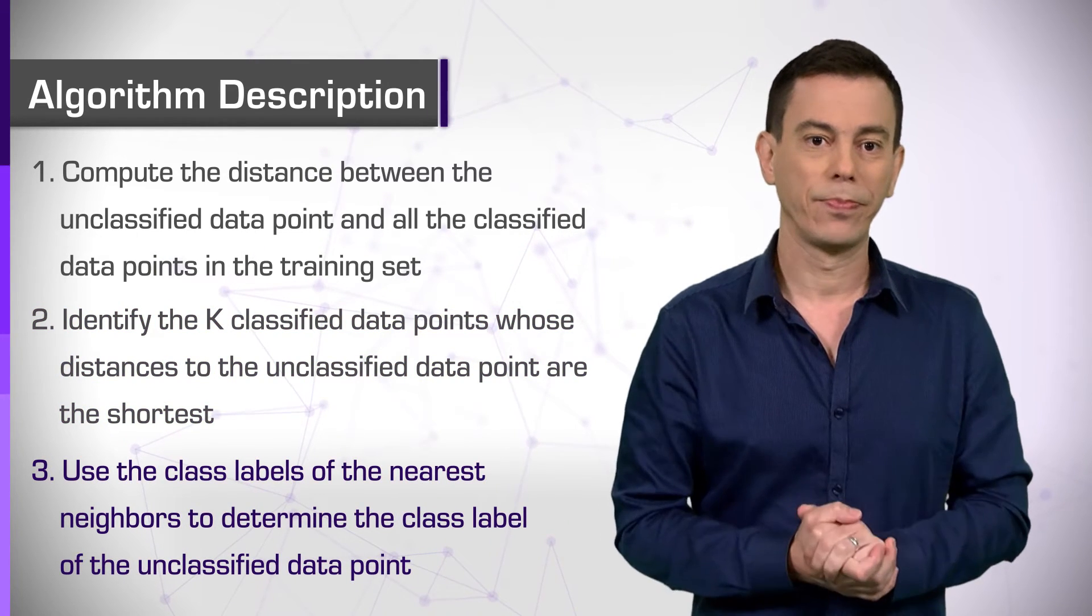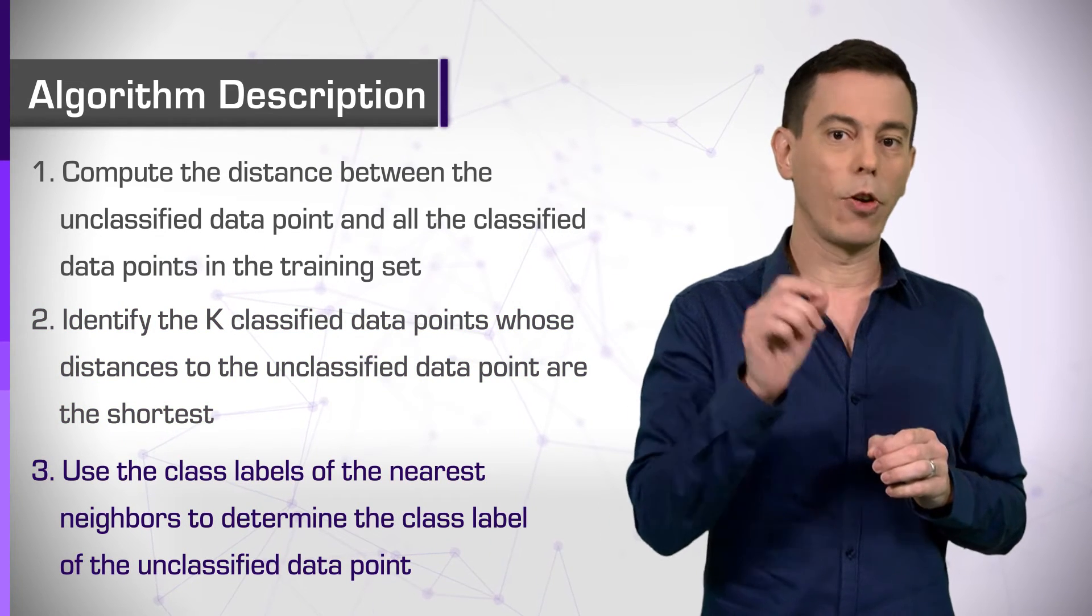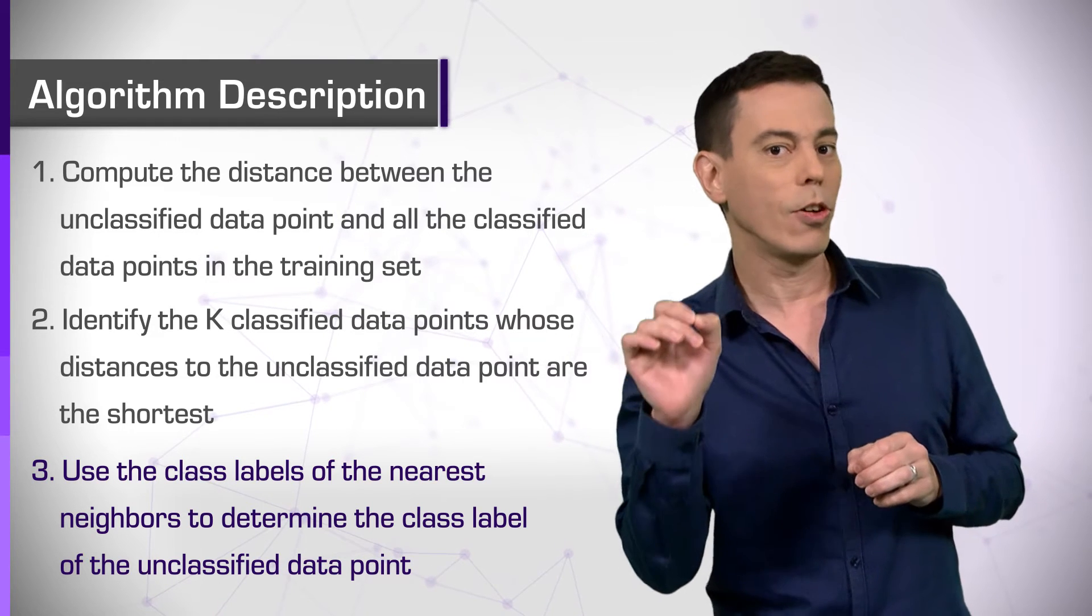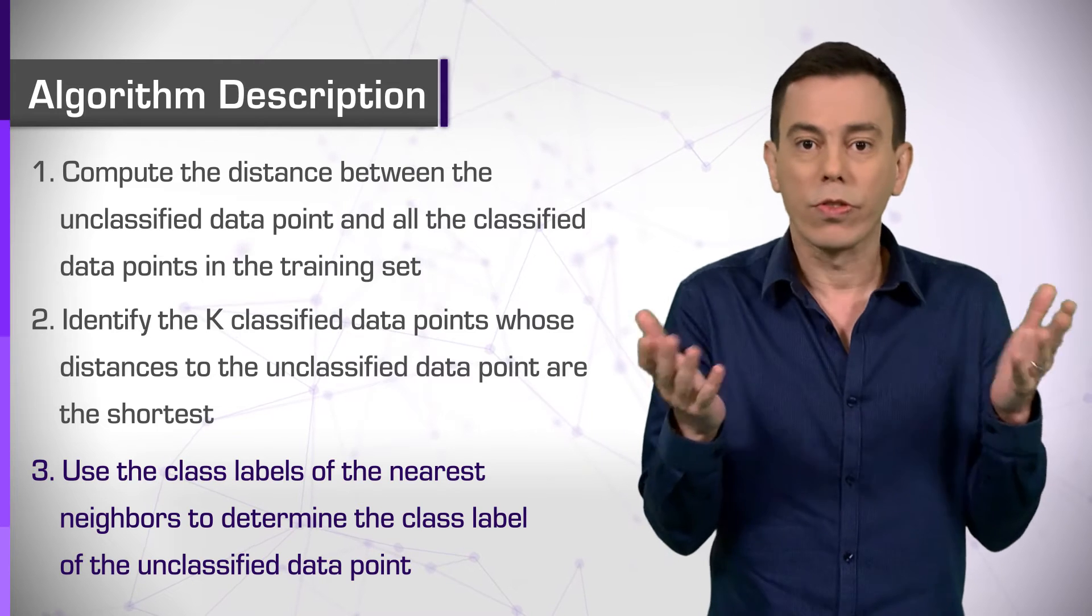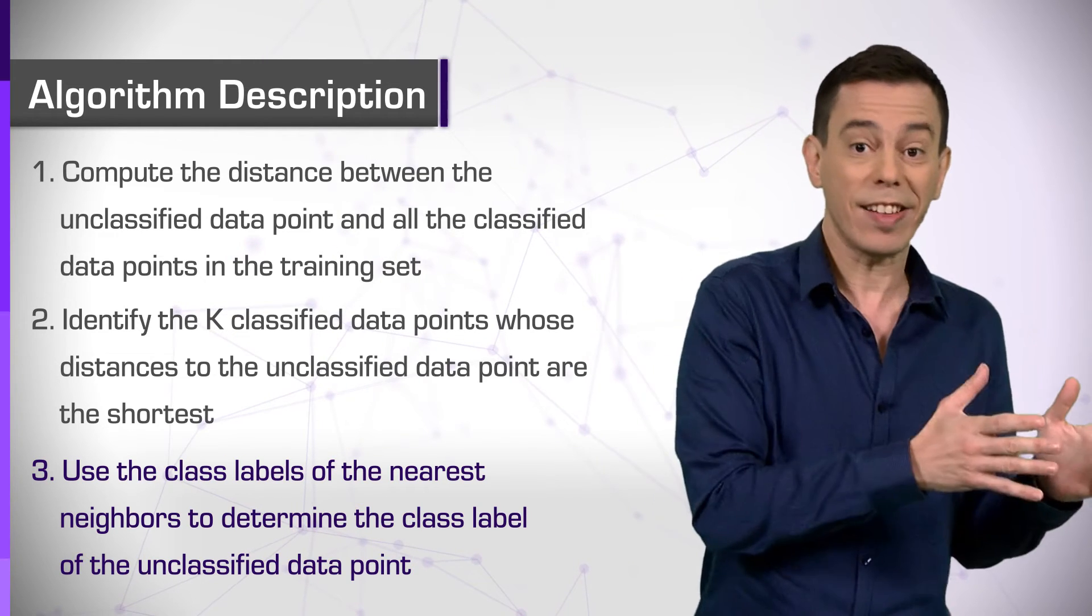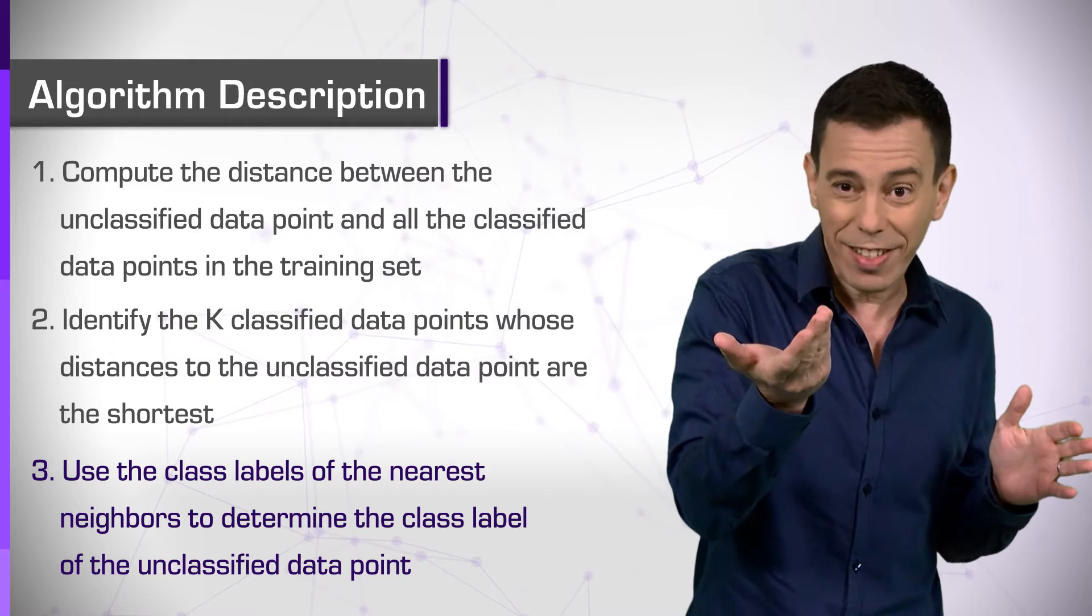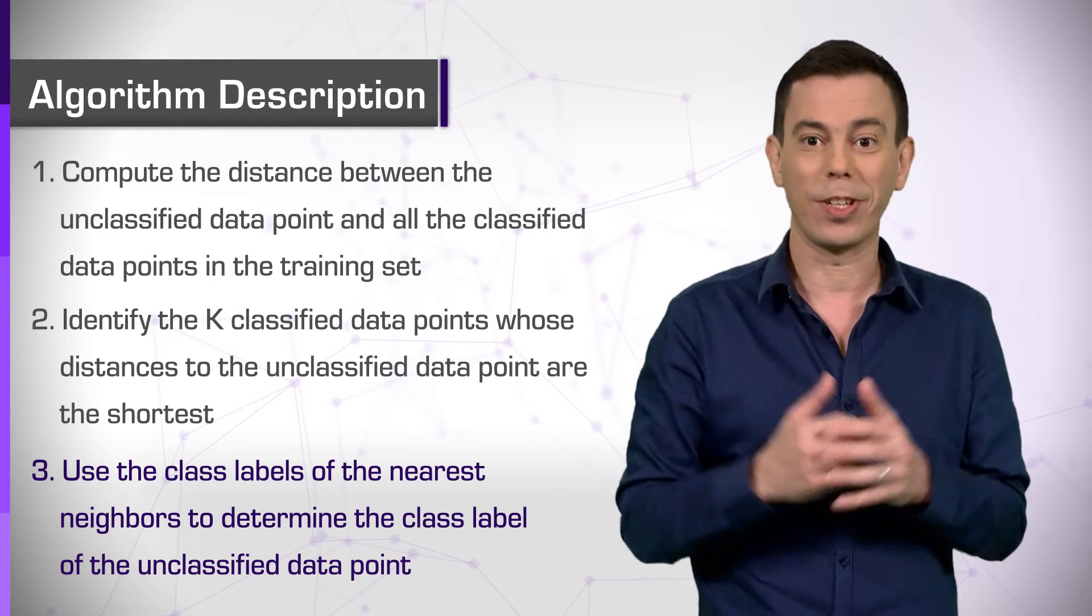Step 3. Use the class labels of the nearest neighbors to determine the class label of the unclassified data point. If all or most of our neighbors belong to the same class, it's a good indication that our unclassified data point also belongs to that class.